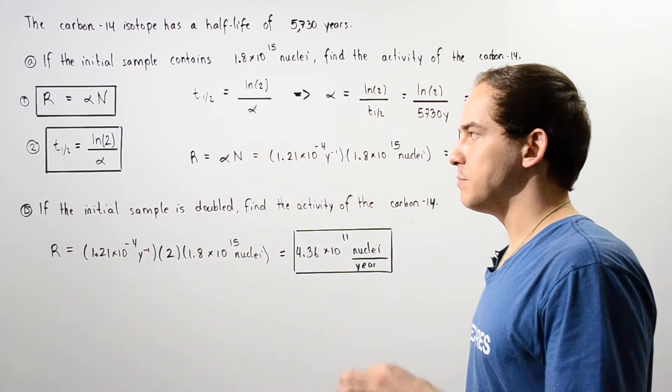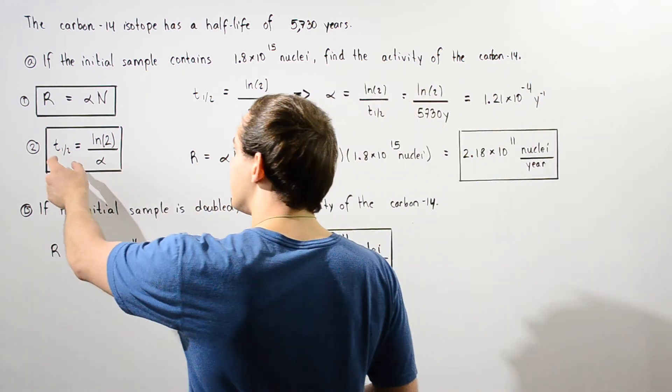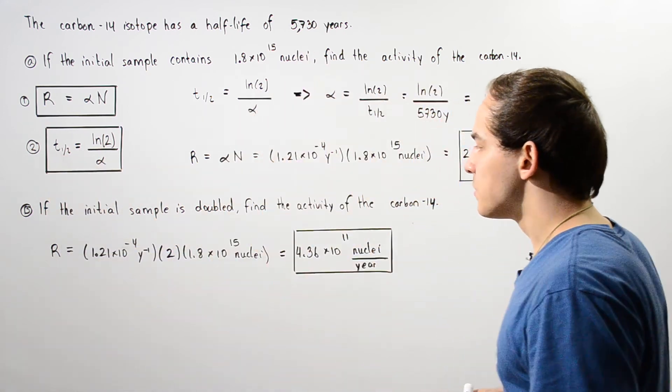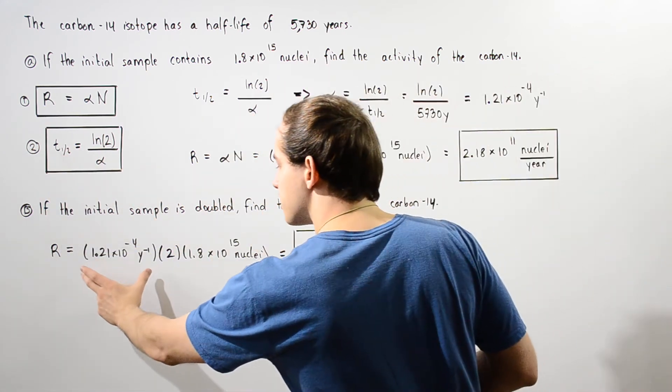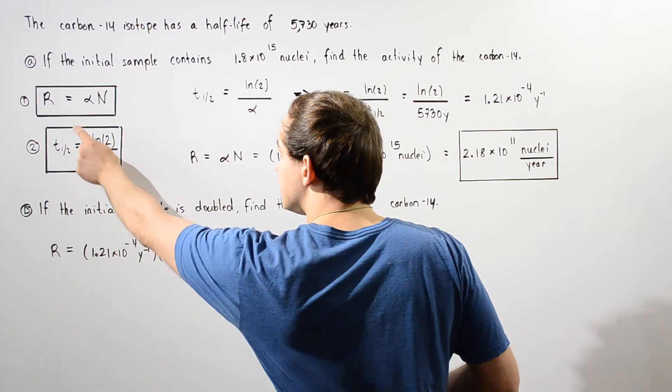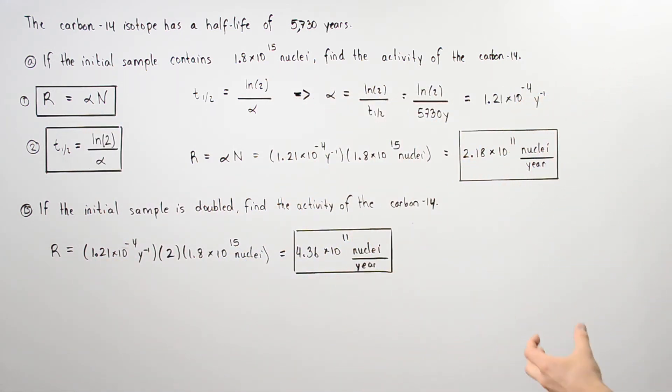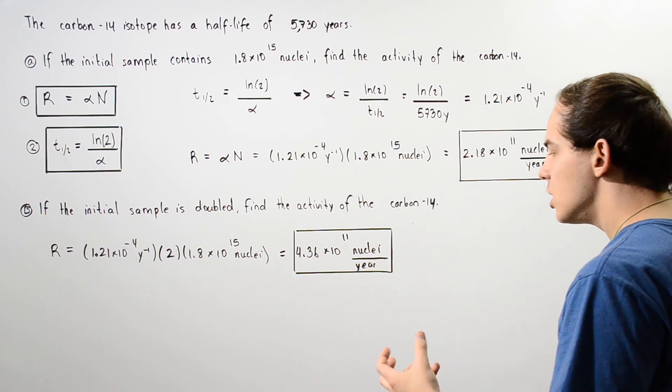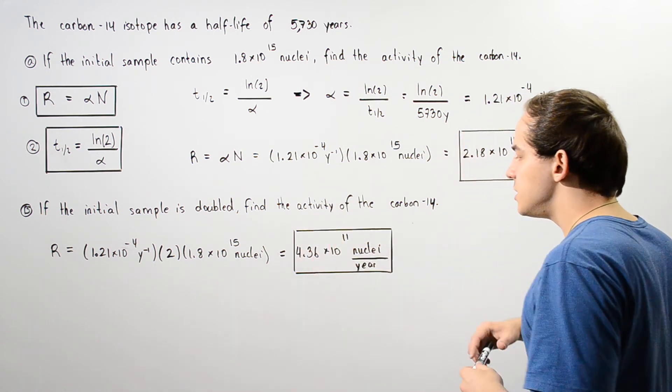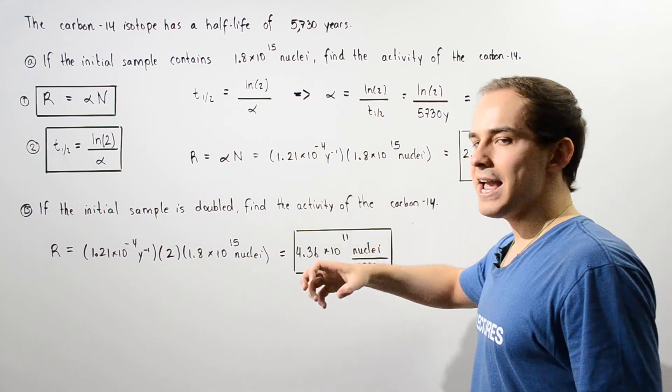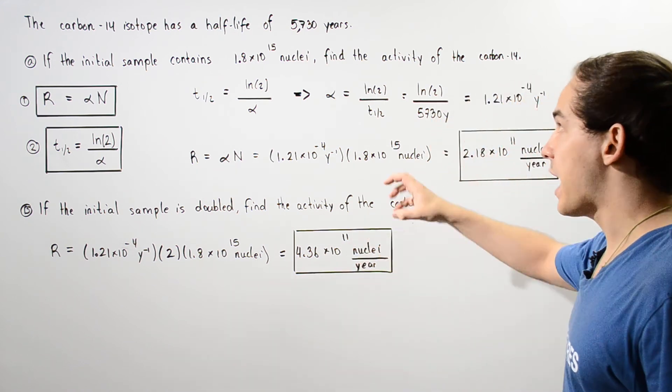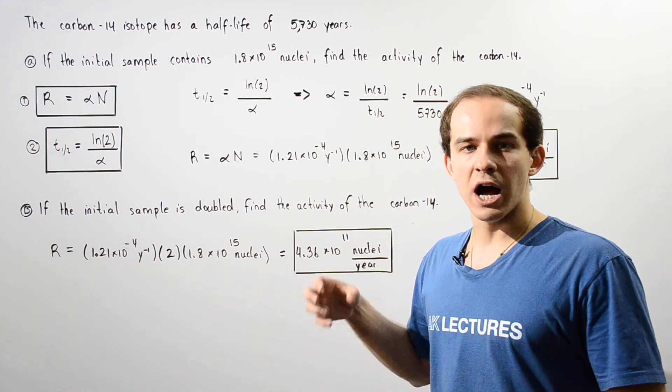When we double the concentration, alpha does not change because alpha only depends on half-life. We use the same alpha in our equation to calculate R. By doubling our initial sample concentration, we double the number of nuclei that decay every year—we double the activity of our isotope.